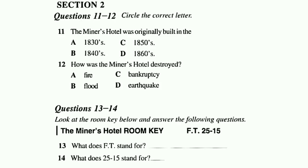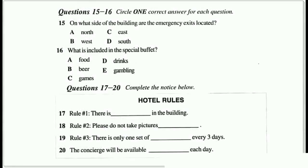Now look at questions 15 to 20. Now listen to the tape and answer questions 15 to 20. There are emergency exits in both towers of the hotel. They are located on the south side, opposite the elevators. Please use these in case of a fire or other emergency. We have some special events happening this week. Our Miner's Diner is offering a special Miner's Buffet dinner this Friday and Saturday for only $20 per person. The buffet will be available from 5 to midnight.